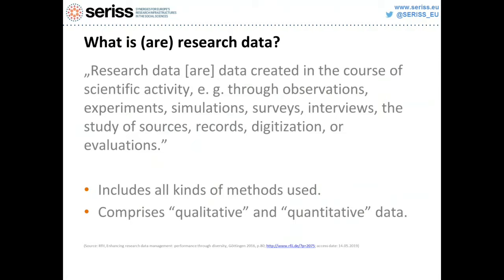Hello, my name is Oliver Watteler. I'm working for the data archive at GESIS in Germany, among other things representing data users and data depositors. Before we go into the details of how to best find research data for social science research, let's have a quick look at the definition of what data actually are. Research data are, by a definition from an official institution in Germany, data created in the course of scientific activities — for example, observations, experiments, study sources, digitization. Most of us are familiar with surveys.